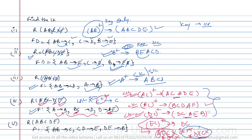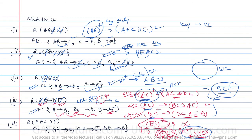So for question four we have three candidate keys: AC, BC, and DC. Any superset of these — for example ABC — would be a super key but not a candidate key. The candidate key is the minimal set. Out of these three candidate keys we can choose any one as the primary key.